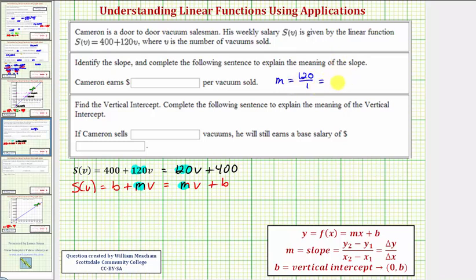The slope is the constant rate of change or the change in y with respect to the change of x. Or in our case, the change in our function value S(V) with respect to the change in the input variable V. So the slope is telling us that the salary will increase 120 dollars each time one vacuum is sold. Or we can say Cameron earns 120 dollars per vacuum sold.